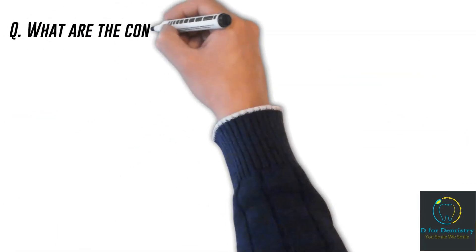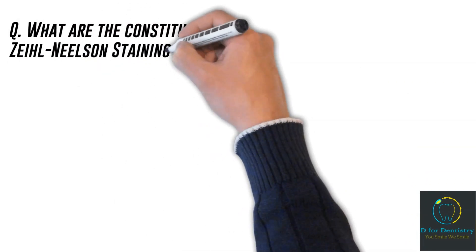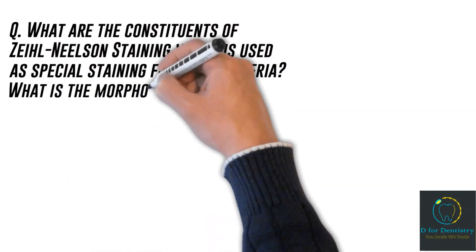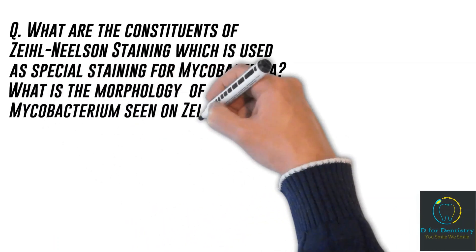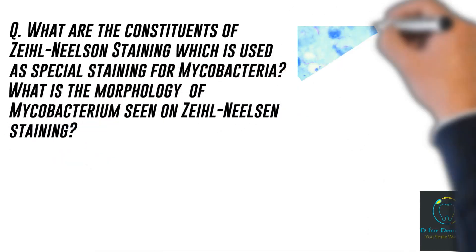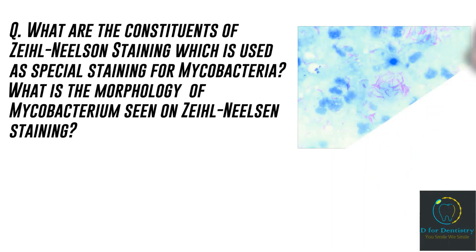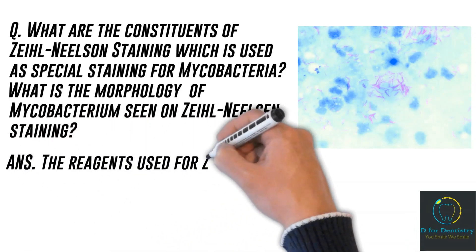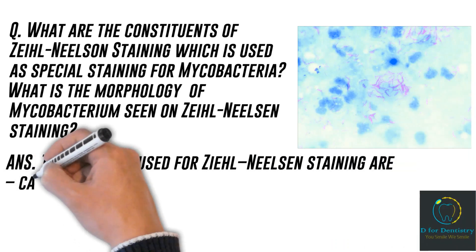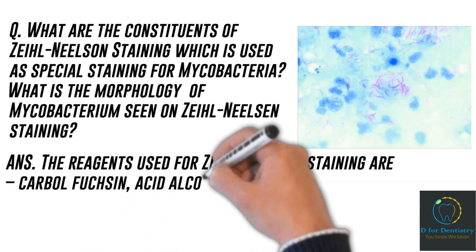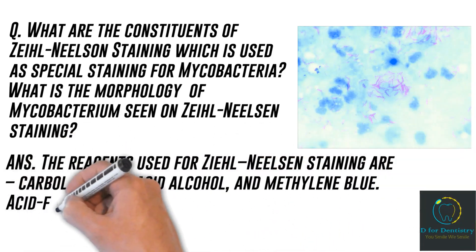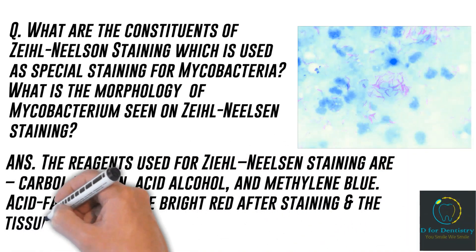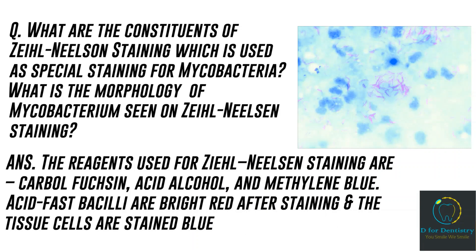And the last question: What are the constituents of Ziehl-Neelsen staining, which is used as special staining for mycobacteria? Also, what is the morphology of mycobacterium seen on Ziehl-Neelsen staining? Answer: The reagents used for Ziehl-Neelsen staining are carbolfuchsin, acid alcohol, and methylene blue. Acid fast bacilli appear bright red after staining, and the tissue cells are stained blue.